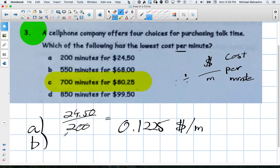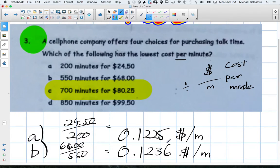For B, same idea. It is dollars, so $68 over 550 minutes. So again, it's going to be dollars per minute. What is that right here? 0.1236.